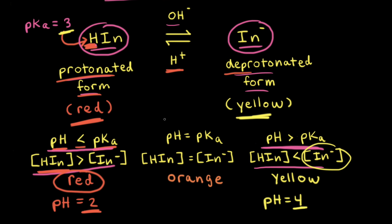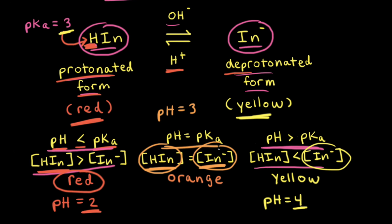Finally, let's think about the situation where the pH is equal to 3. Since the pKa value is also equal to 3, the pH equals the pKa value. For a conjugate acid-base pair, when the pH equals the pKa, the concentration of the weak acid equals the concentration of the conjugate base. If we have equal amounts of the protonated form and the deprotonated form, we have equal amounts of red and yellow. Therefore, at a pH of 3, the solution would be orange.